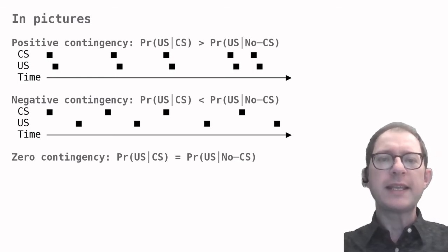Now, in these two cases, it is kind of easy to guess what an animal would learn. In the case of a positive contingency, we should see a CR, a conditioned response, being learned to the CS. In the case of a negative contingency, there should be no CR or maybe a CR that is appropriate to the absence of the US rather than to its presence.